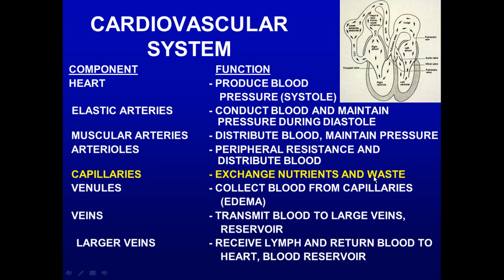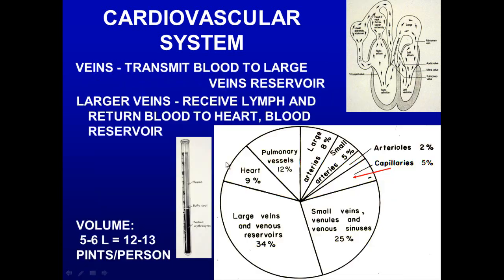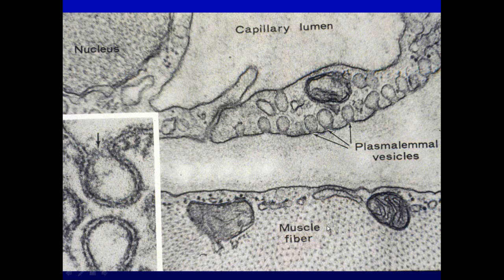In the cardiovascular system, the capillaries are where exchange of nutrients and waste occurs, and that is where we focus in this conference. The surface area is greatest at the capillaries, as they provide the exchange. Capillaries, like other vessels, are adapted to metabolic needs and need to be thin-walled. In the cardiovascular system, capillaries represent only five percent of total blood volume, yet do a remarkable job.